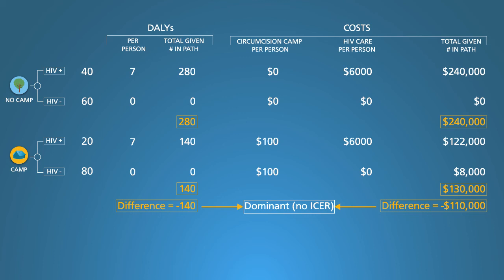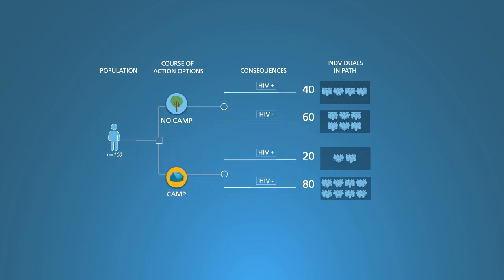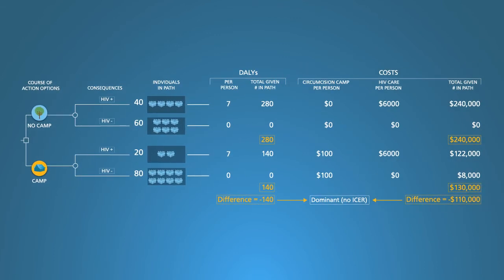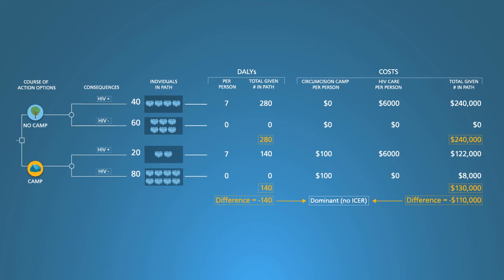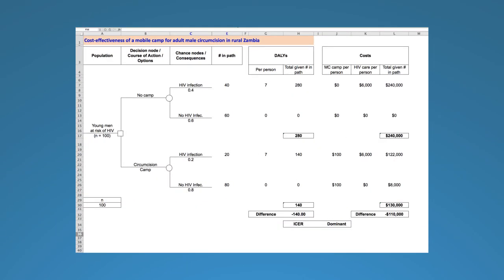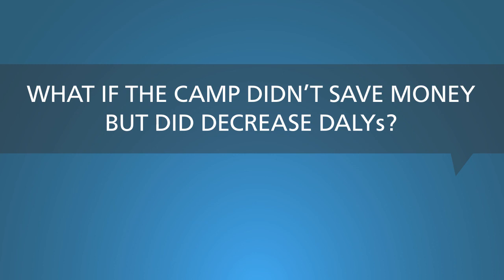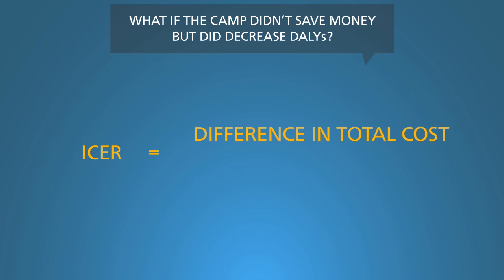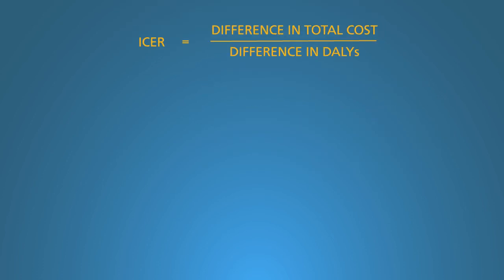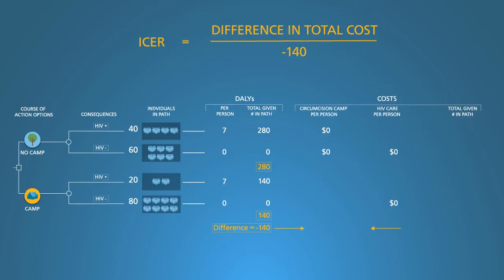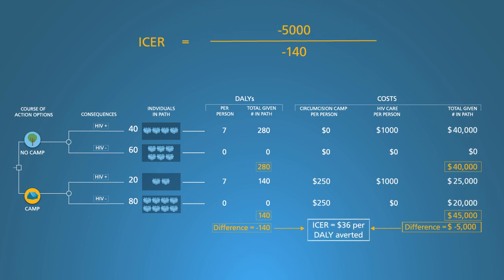Let's step back to consider what we did with the decision tree. We compared two action options, portrayed the probability of key disease outcomes, and attached DALYs and money to those outcomes, arriving at the expected DALYs and costs for each action option. However, real decision trees aren't as visually elegant as in this video. Here we see an Excel version of the decision tree, which has a look more typical of a real analysis. If the camp didn't save money but did improve health (i.e., decreased DALYs), we'd calculate the ICER as the difference in total cost divided by the difference in DALYs. But when an intervention is dominant, we don't calculate the ICER. In a hypothetical example where camps cost $250 per client and lifetime medical costs were only $1,000, the ICER would be $36.